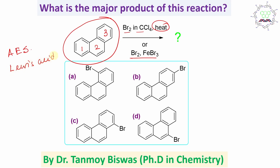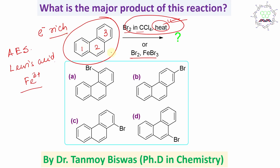In the FeBr3 case, iron(III) bromide acts as a Lewis acid. But in the first case with just heat, no Lewis acid is needed — supplied heat is capable of carrying out the reaction. Why? Because these three benzene rings are fused together, this molecule is electron-rich, and you can consider that phenanthrene is activated for aromatic electrophilic substitution.